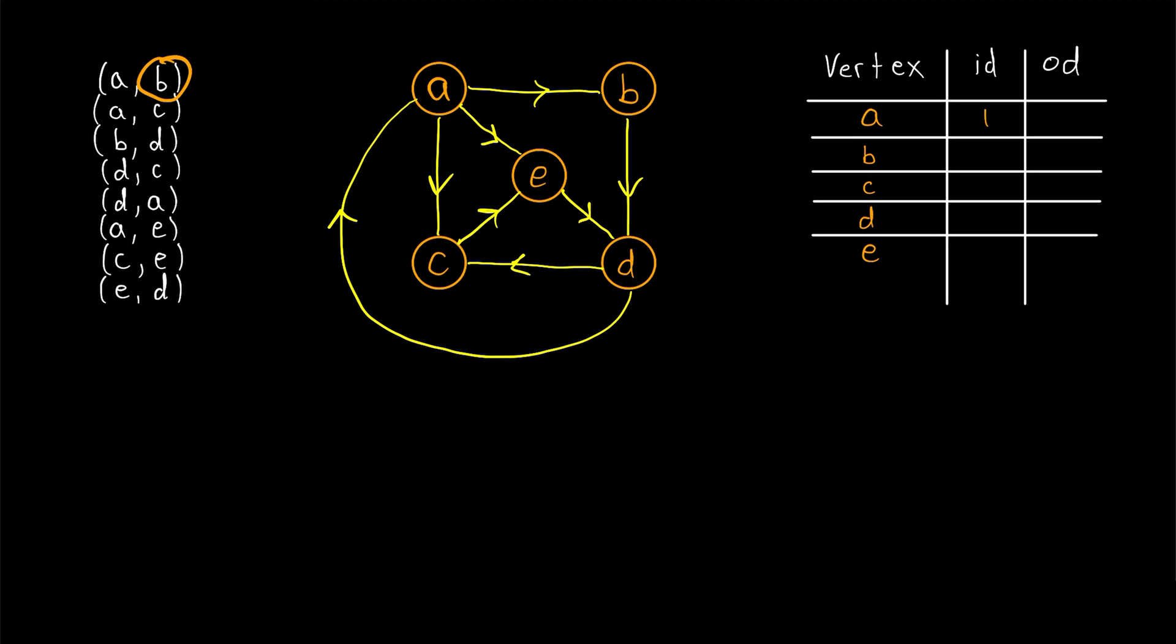I also see just one arc ending with B. So the in-degree of B is one. Then if we want to go back to using our graph, we see there are two arcs going to C. So the in-degree of C is two. There are also two arcs going to D. So its in-degree is two. And there are two arcs going to E.